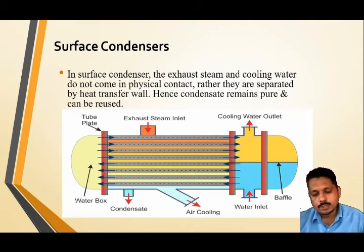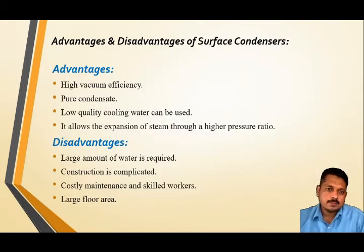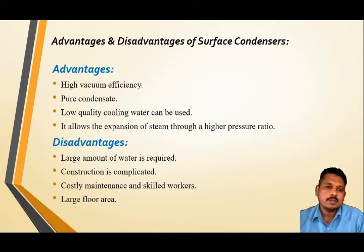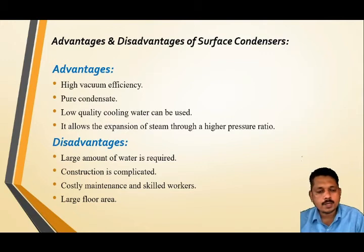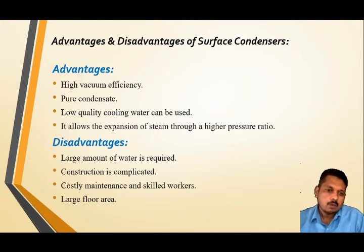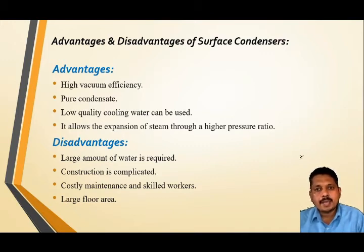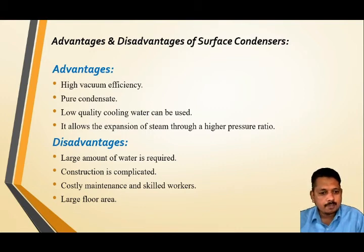One important thing is that in a surface condenser, we can use the cooled condensate again for feeding the boiler. Because of this, there are many advantages. First is high vacuum efficiency. Second, the condensate is pure, meaning the water collected after cooling can be directly used as feed water. Third, low quality cooling water can be used. Disadvantages include: a large amount of cooling water is required continuously, the system is isolated so cooling efficiency is less than a jet condenser, construction is complicated as the structure must convert vapor into condensate, cost is higher, and a large floor area is required.